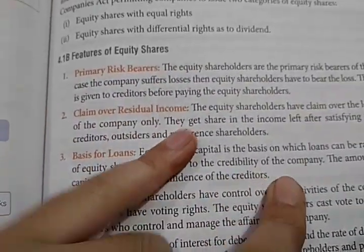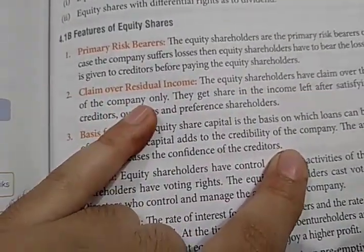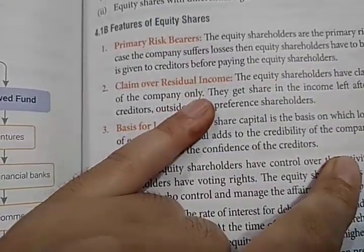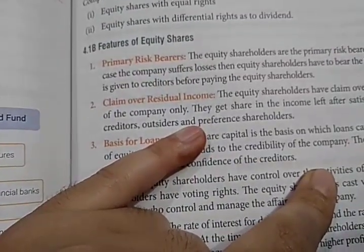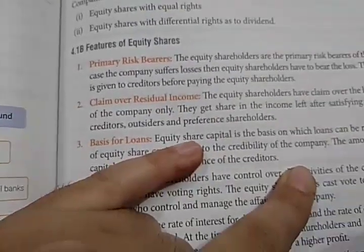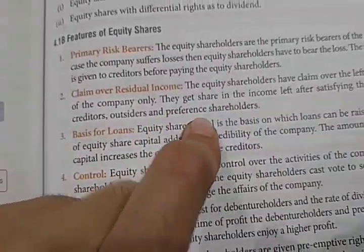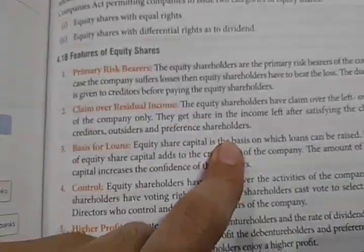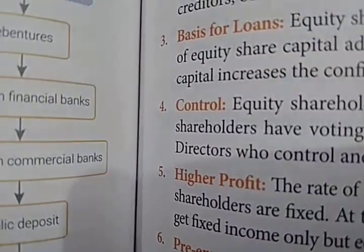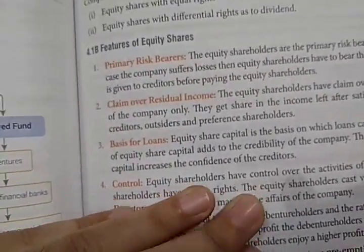Next is claim over residual income. Shareholders have a claim over the leftover income of the company only — after paying all debts, the remaining residual income is what they can claim. They get a share in the income leftover after satisfying the claims of all creditors, outsiders, and preference shareholders. Only after settling everyone else's claims can equity shareholders claim their income.